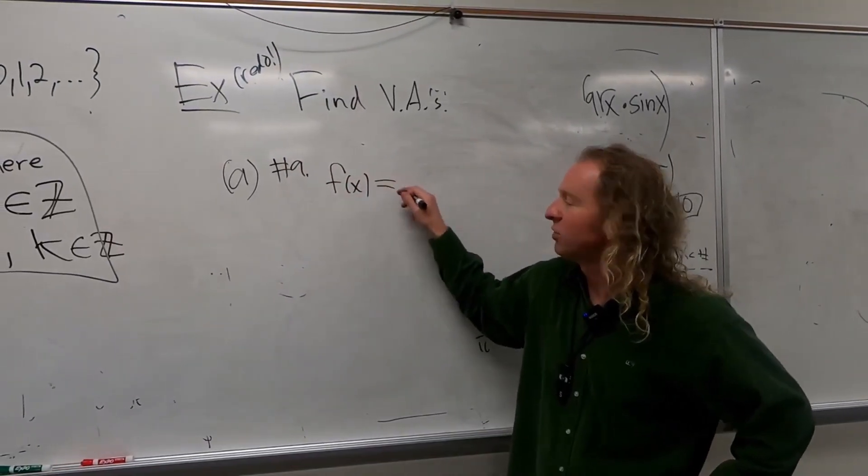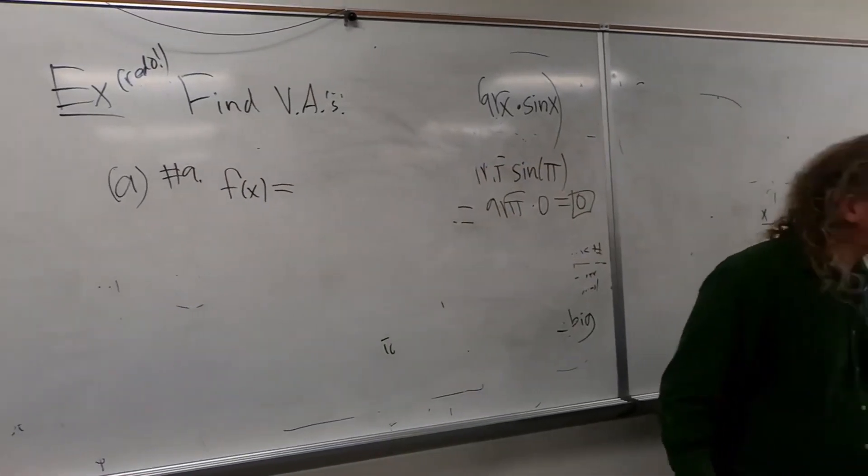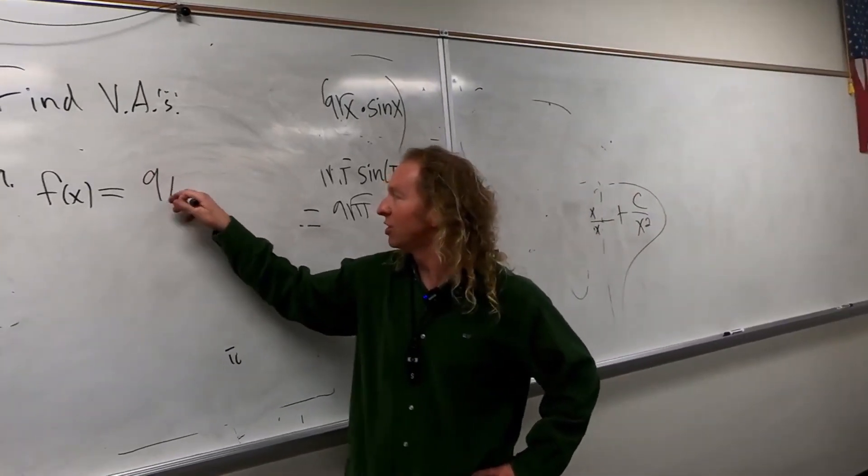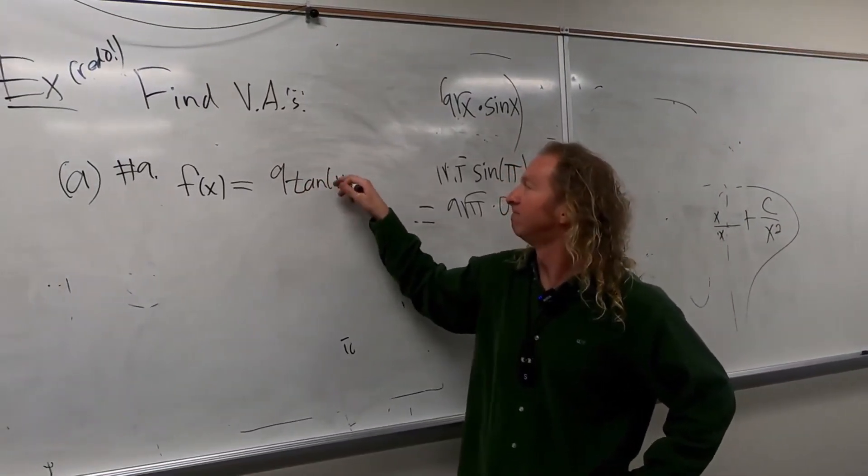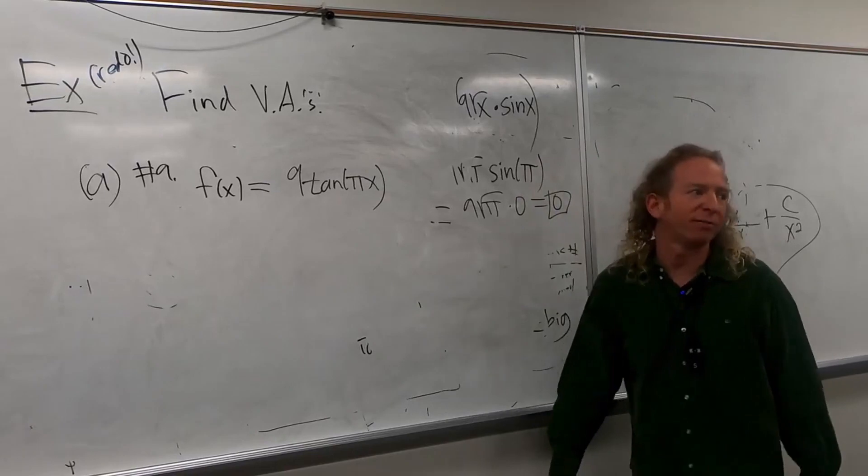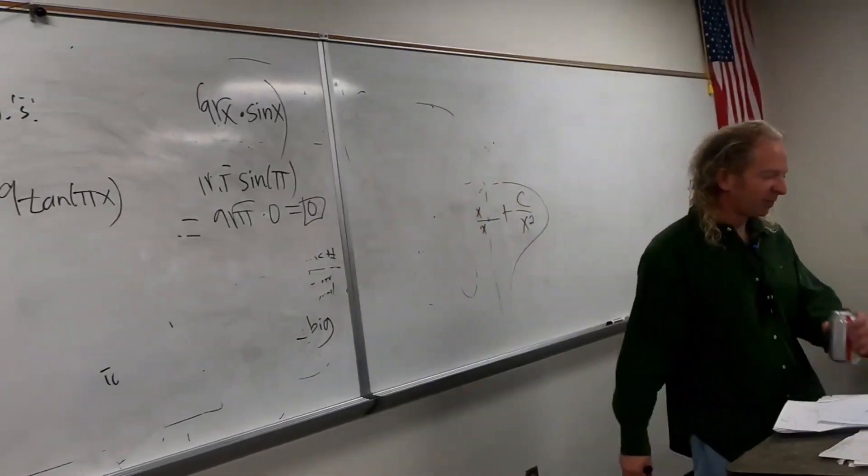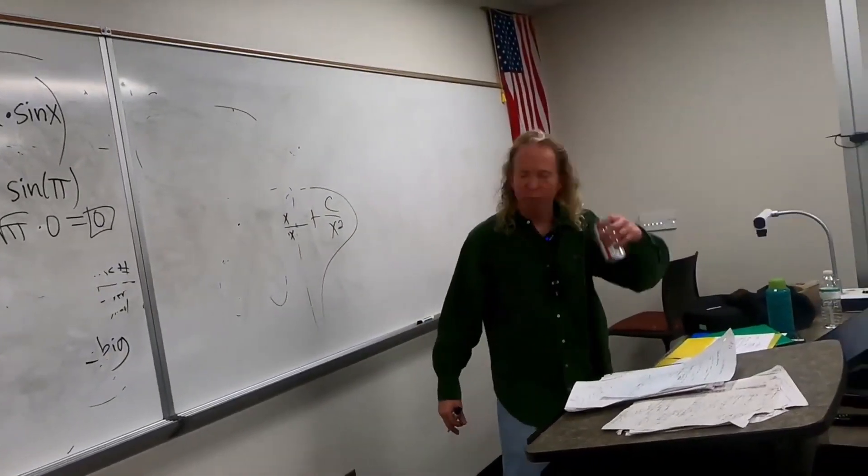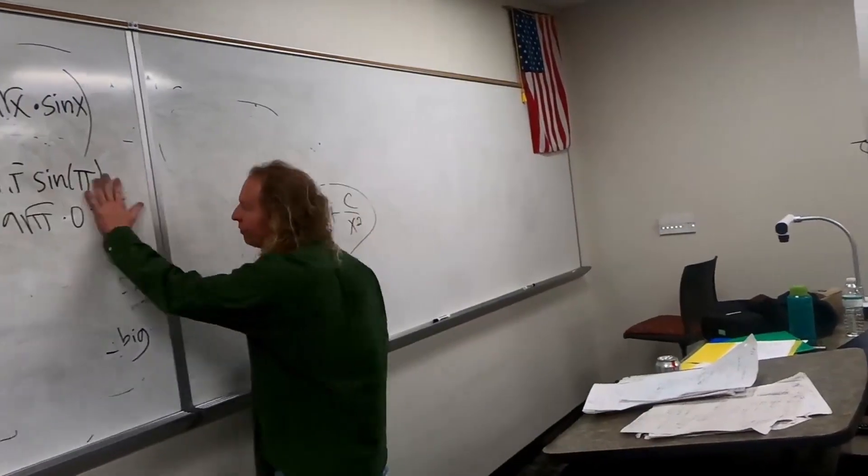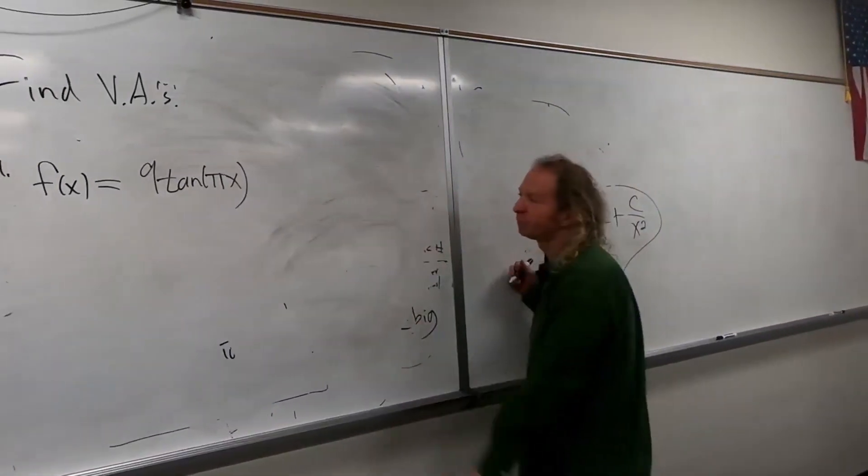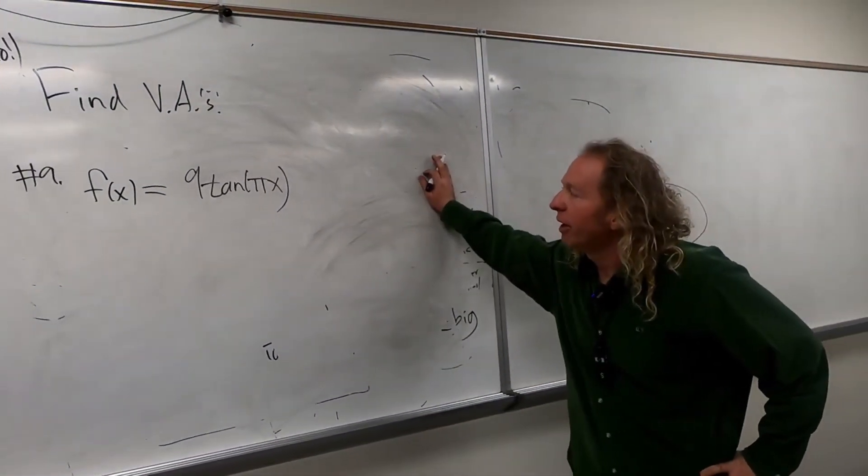F of x equals tangent of pi x. It's pretty good, it's got a 9 there that makes it look confusing. Tangent of pi x.